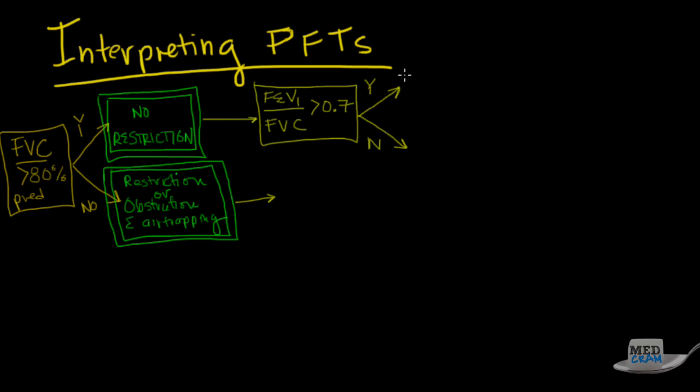If the answer is yes, then there is no obstruction. So by definition, if the FEV1 divided by the FVC is greater than 0.7, there is no obstruction. If, however, it's less than that, then you have obstruction.